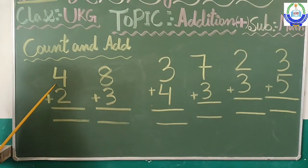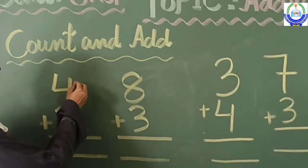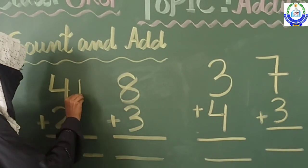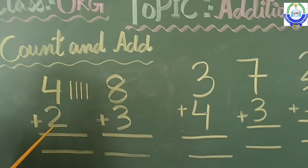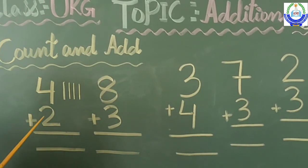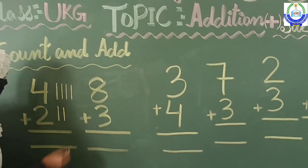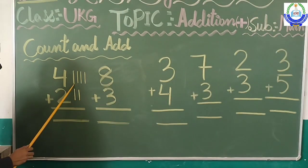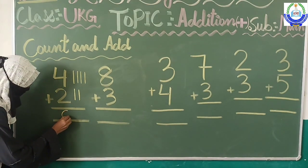Which number is here, students? This is four. We will draw four lines: one, two, three, and four. Next, which number is here? This is two. We will draw two lines: one, two. Now let's count them all: one, two, three, four, five, and six. So we will write here: six.